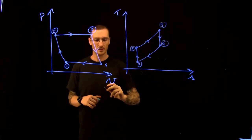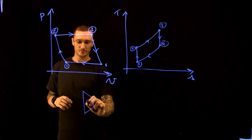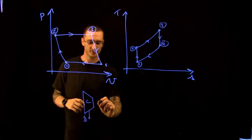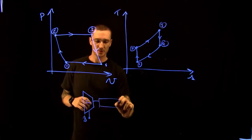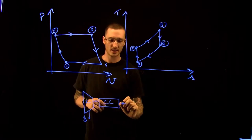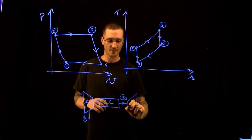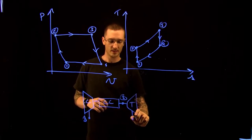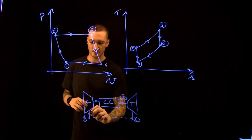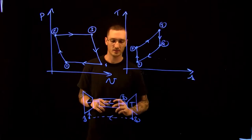On a schematic, we have a compressor with air entering at point 1. Then it goes into a combustion chamber — from point 2 it's compressed, goes through the combustion chamber where heat is added, reaches point 3 before the turbine, goes through the turbine, and comes out at point 4.